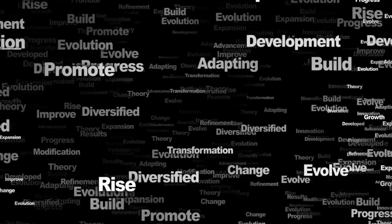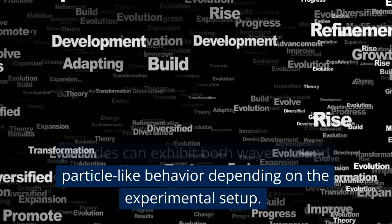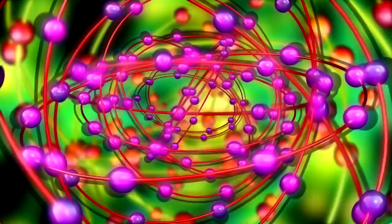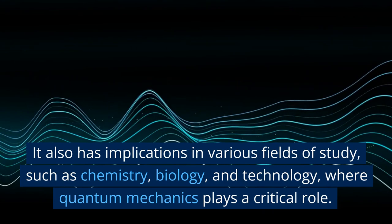The complementarity principle also describes the wave-particle duality of particles, which means that particles can exhibit both wave-like and particle-like behavior depending on the experimental setup. For example, in the famous double-slit experiment, electrons behave like waves when passing through a pair of slits, but like particles when detected on a screen. The importance of the complementarity principle lies in its ability to provide a unified understanding of the behavior of particles in quantum mechanics, with implications in various fields such as chemistry, biology, and technology.